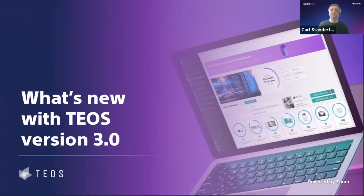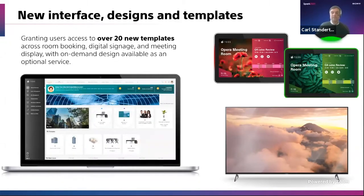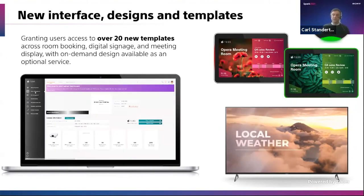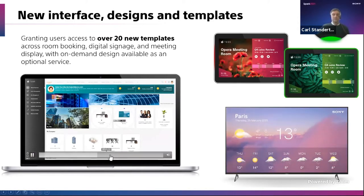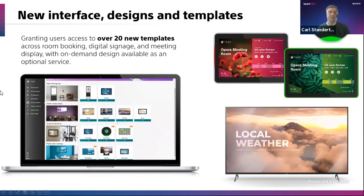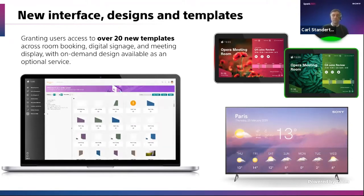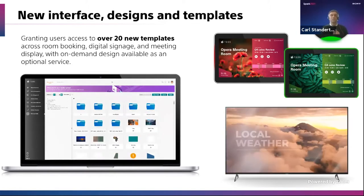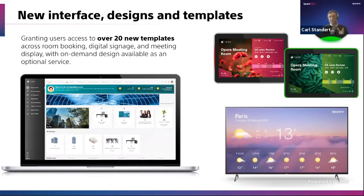So what's new with TEOS version 3.0? We're going to highlight some of the key updates and features. The first one is really about a new interface, new designs, and new templates. With the new interface you can see on the laptop, we really wanted to simplify the process for admins and users. We integrated a new user interface to make the process much more seamless and easier to use. We've added descriptions for different pages and help bubbles throughout the whole platform — so it's going to be easier to navigate, easier to use, and you'll get smarter information about the different parts of the platform. That was one really major change.